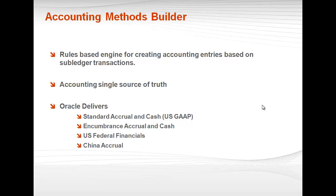The Accounting Methods Builder is a rules-based engine for creating accounting entries based on subledger transactions. It is going to be the single source of truth. Currently, Oracle is only delivering standard accrual, standard cash — both US GAAP — encumbrance accrual and cash, US Federal Financials, and China accrual. Notice IFRS is not there.